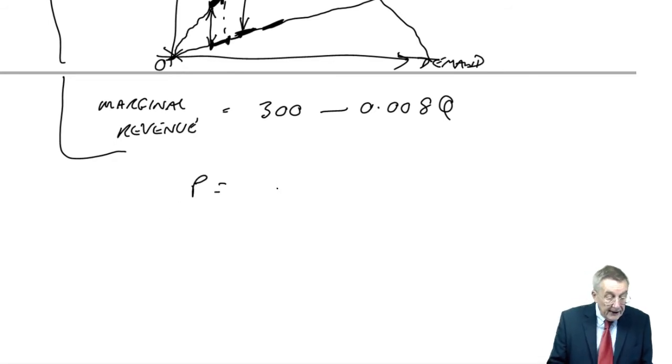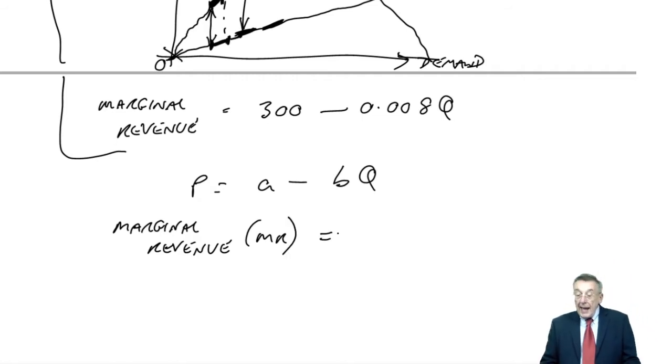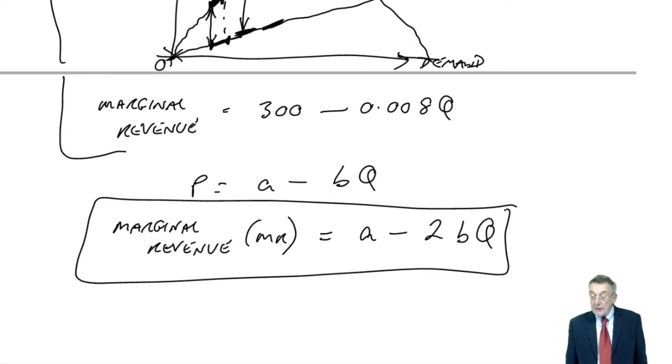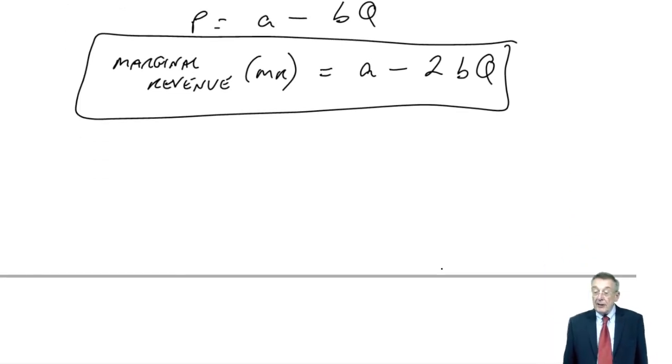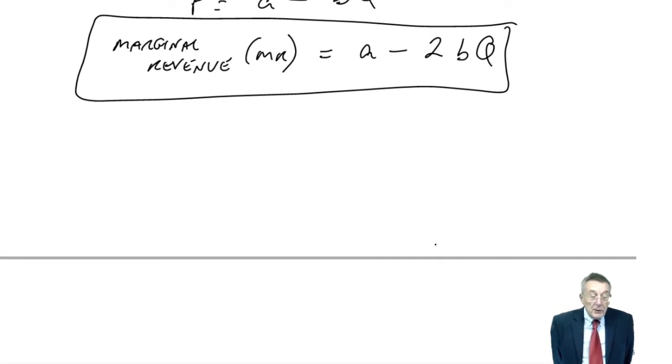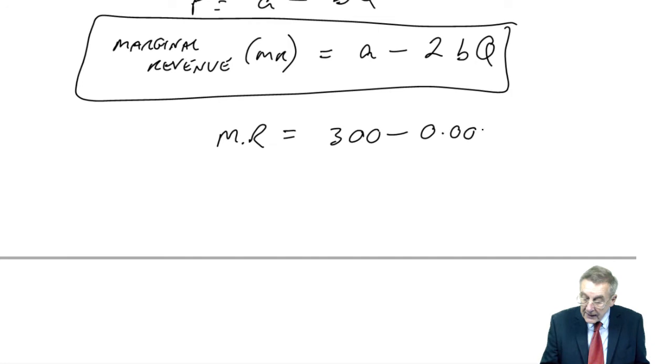You can simply learn the fact that the marginal revenue... We know how to get a price demand equation. In this case, we were given it. In general terms, it's A minus BQ. The equation for the marginal revenue, or MR, is A minus 2BQ, where A and B are the same as in the price demand equation. So you can forget that last bit about the graph. Look back at the question. We're told the demand curve, so we know A is 300 and B is 0.004, and therefore, the marginal revenue, A is 300 and 2 times B is 0.004, so minus 0.008Q.